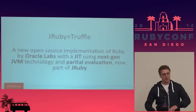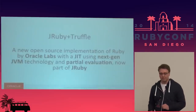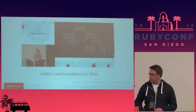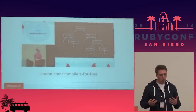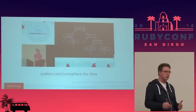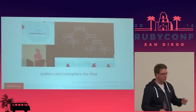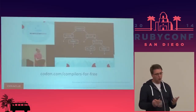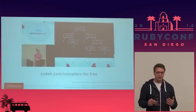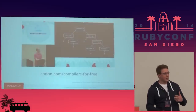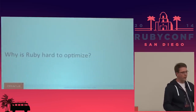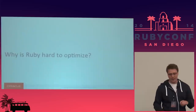We're using a different technique called partial evaluation. Tom Tejo gave a talk on partial evaluation last year — you can refer to his talk. But I'm not going to talk about partial evaluation or the JVM today. What I'm going to talk about instead is: why is Ruby hard to optimize, and what is the one thing we need to do to make it easier?